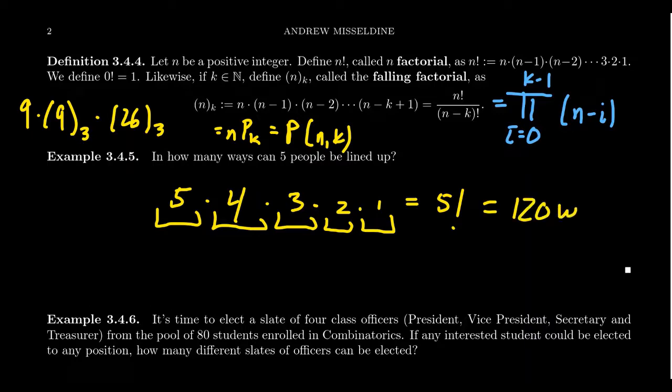There's going to be 5 factorial ways of lining up 5 people into a line, which of course is the same thing as 120 ways. But again, 5 factorial is what we care about. So when you are counting a list, all the possible lists without repetition, and you use every element inside of your alphabet, then you end up with a factorial itself.